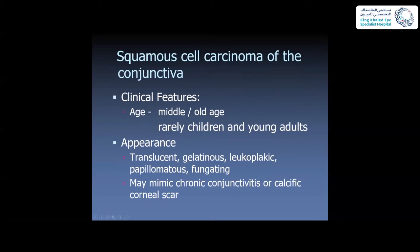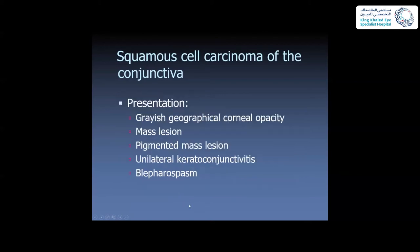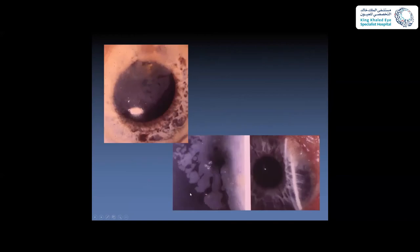OSSN typically affects middle-aged individuals, rarely children and young adults. The appearance can be translucent, gelatinous, leukoplakic, papillomatous, or fungating, and may mimic chronic conjunctivitis or calcific corneal scar. It can present as a geographic corneal opacity. The most common presentations are mass lesions, followed by pigmented lesions, unilateral chronic conjunctivitis, and blepharospasm.